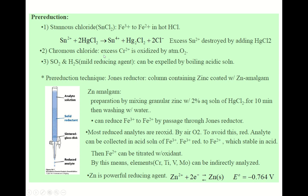Chromium(II) chloride can also be used as a reducing agent. Excess Cr²⁺ is oxidized by atmospheric oxygen. SO₂ and H₂S are mild reducing agents that can be expelled by boiling an acidic solution. A very special setup for pre-reduction is the Jones reductor.